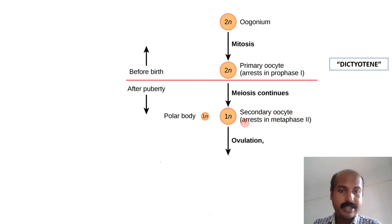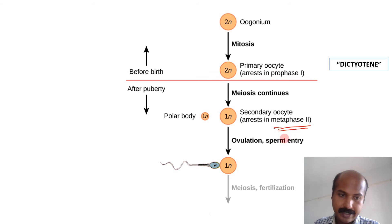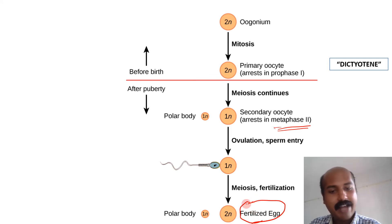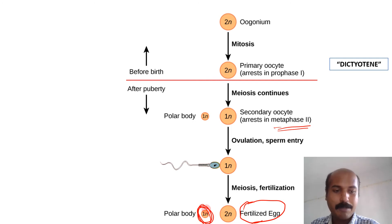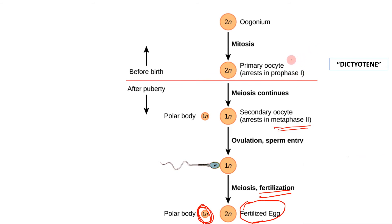The second meiotic arrest is released only if fertilization occurs. The secondary oocyte is the product that is ovulated and can undergo fertilization. If fertilization occurs, meiosis continues to form a fertilized egg and the second polar body. There is no production of a true ovum — only a fertilized egg. The second polar body forms only if fertilization occurs.